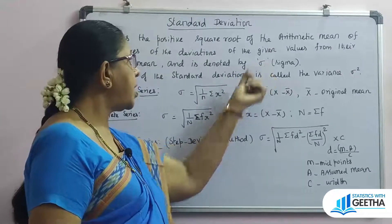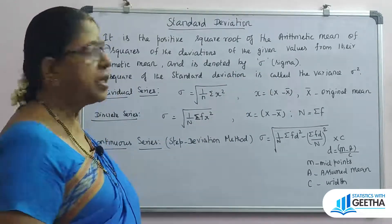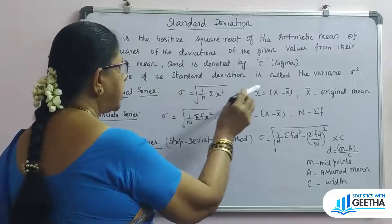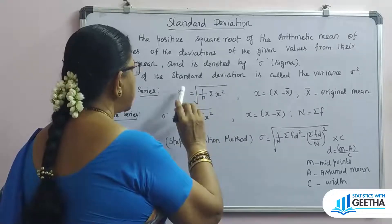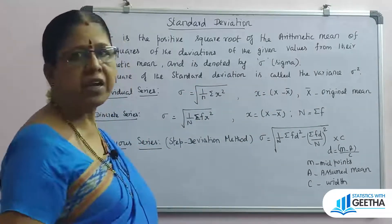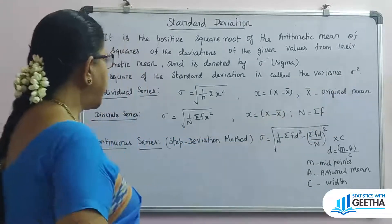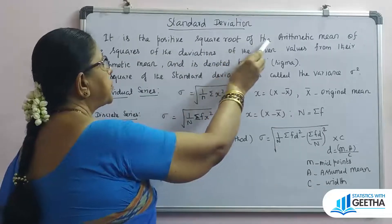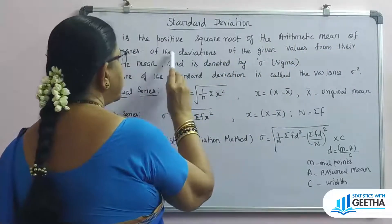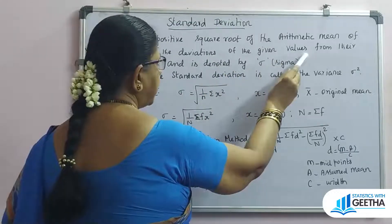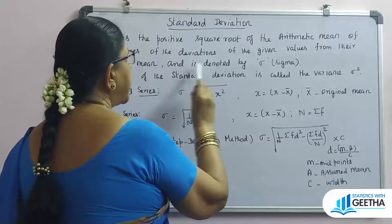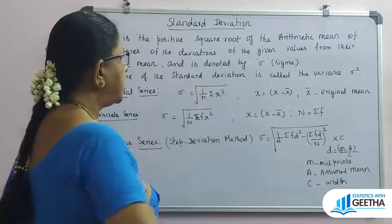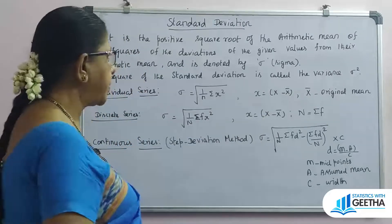The symbol is the Greek letter sigma — alpha, beta, gamma, delta — that is sigma. The square of the standard deviation: you can take the root of sigma squared, which is the variance. It is denoted by small sigma. The square of the standard deviation is called the variance, that is sigma squared.